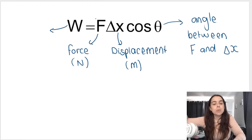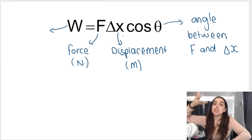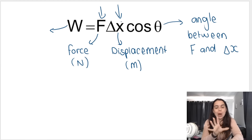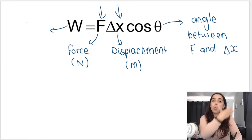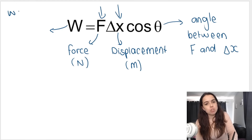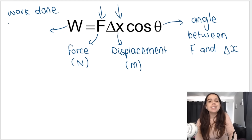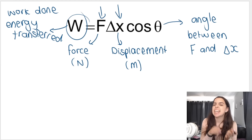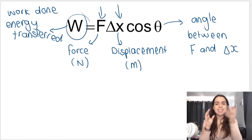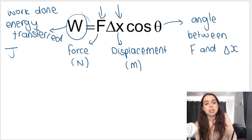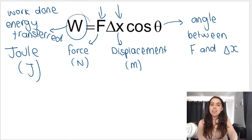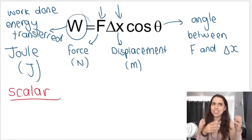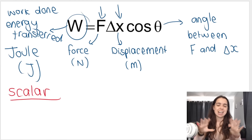Force is measured in Newtons, and Δx is displacement measured in meters — please convert to meters if not given in meters. Cosθ is the angle between the force and the displacement. Multiplying all three together gives the work done, or the energy transferred. Work done is the same thing as energy transferred — very important. Work is measured in joules (J). It's also important to note that work done is a scalar, meaning it does not need a direction. You can simply say the work done by the applied force is 300 joules.